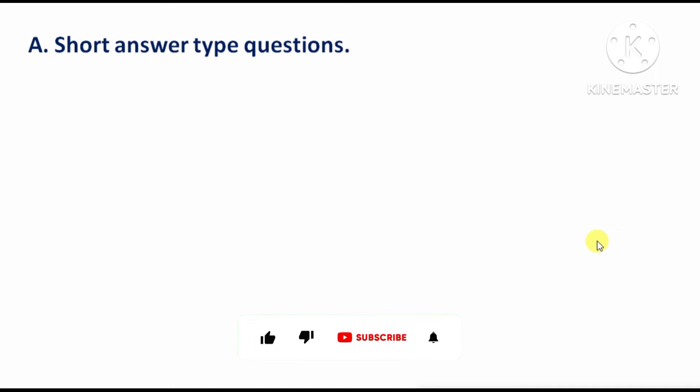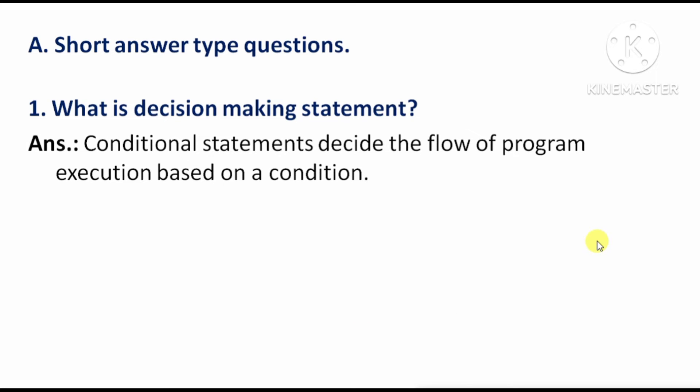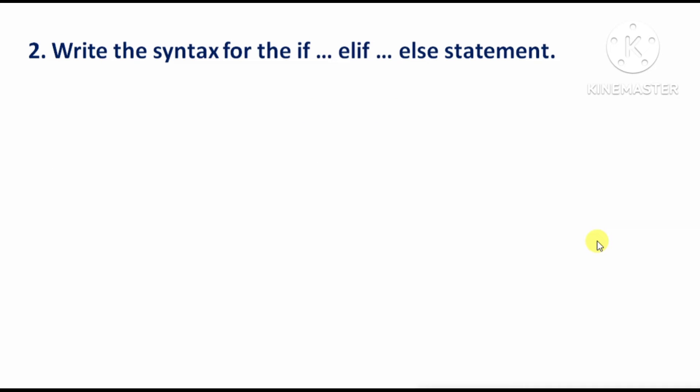Short answer type questions. First question: what is a decision making statement? Answer: conditional statements decide the flow of a program's execution based on a condition. Conditional statements decide the program flow according to the condition.